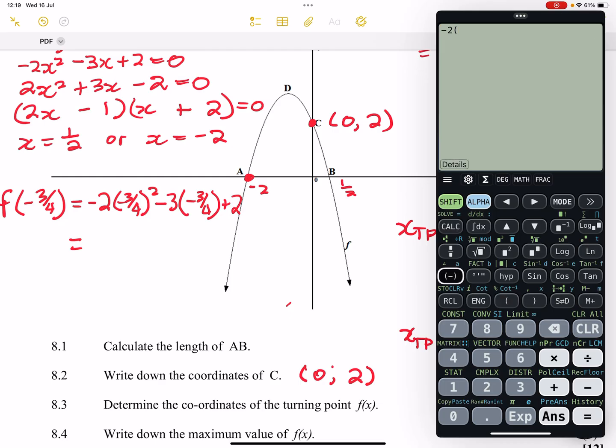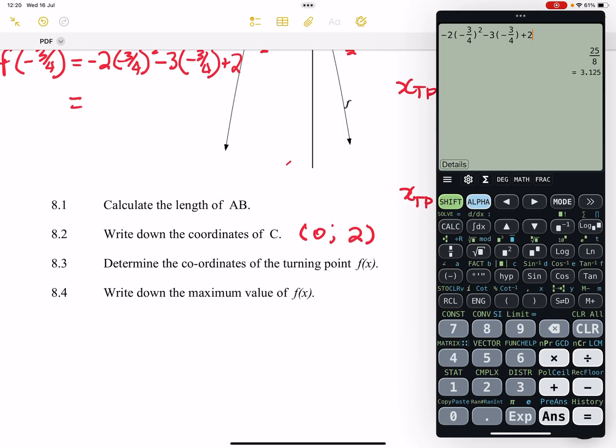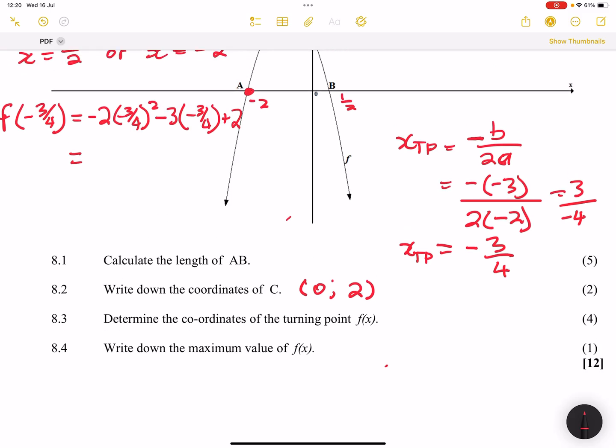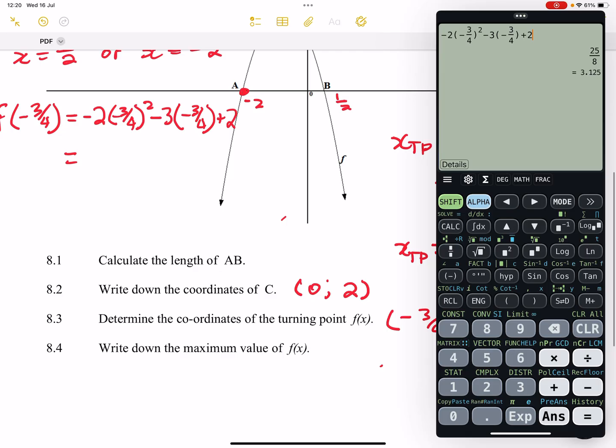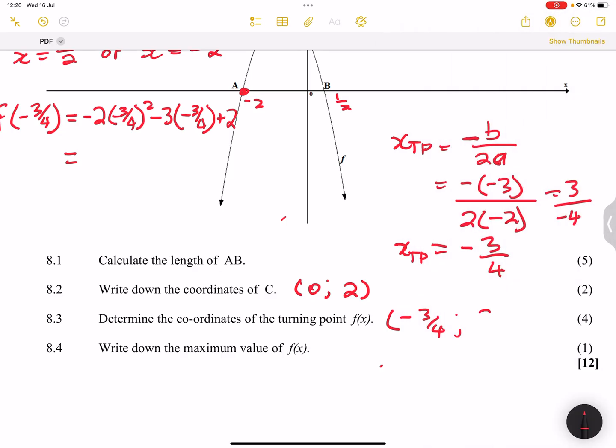And so let's calculate that. -2 into -3/4 squared, -3 into -3/4, and finally, that's plus 2. So I get a value 25/8, or you can say 3.13. So which means that the coordinates of the turning point will be where x is -3/4 and 3.125, or we can say 25/8. And that's how we are going to get that y value of the turning point.